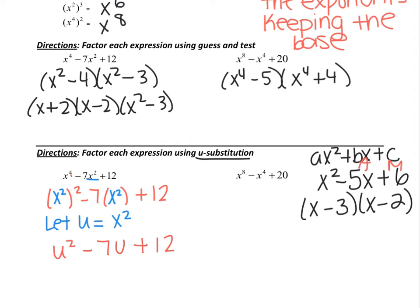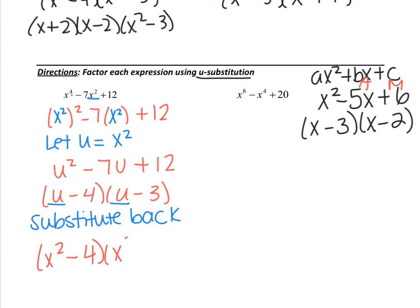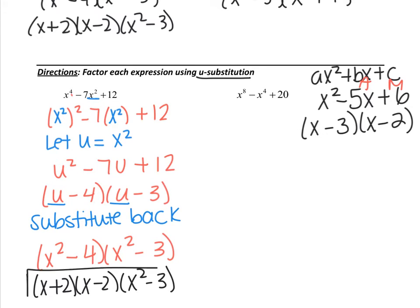Now factor this just like regular — it's a trinomial with a leading coefficient of 1, so this is simply u minus 4 times u minus 3. Now that I've factored, I'm going to substitute back in. Whatever I let u equal is what I put back, so u equals x squared. My answer becomes x squared minus 4 times x squared minus 3. And x squared minus 4 is a difference of two squares, so it factors further as x plus 2 times x minus 2, with x squared minus 3 remaining.